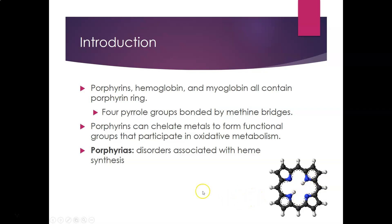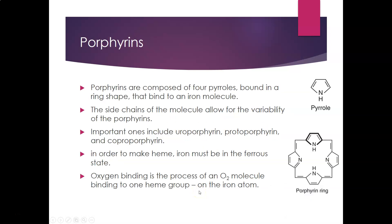The porphyrias are disorders associated with heme synthesis. The pyrrole rings are bound in a ring shape to form the porphyrin ring, which then binds the iron molecule in the middle. The side chains of the molecules allow for the variability of all the porphyrins.